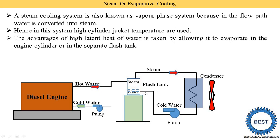This cold water is again supplied into the flash tank. In the flash tank, the cold water and the incoming hot water mix directly, so the temperature is reduced and some of the water is converted into steam. The water from the flash tank is then supplied to the engine by the pump, and the cycle runs continuously.